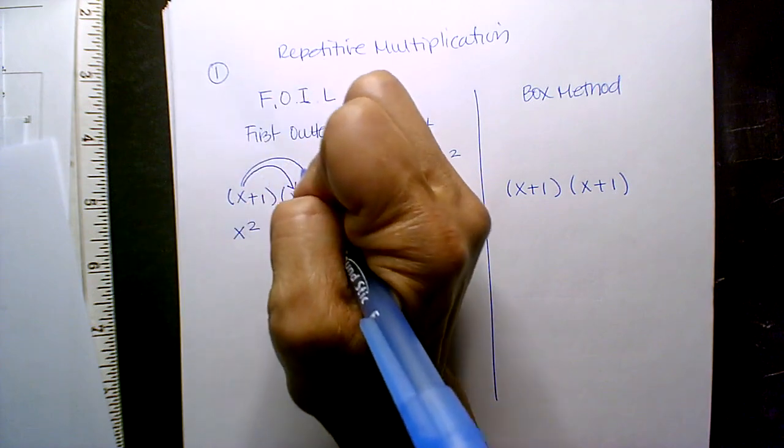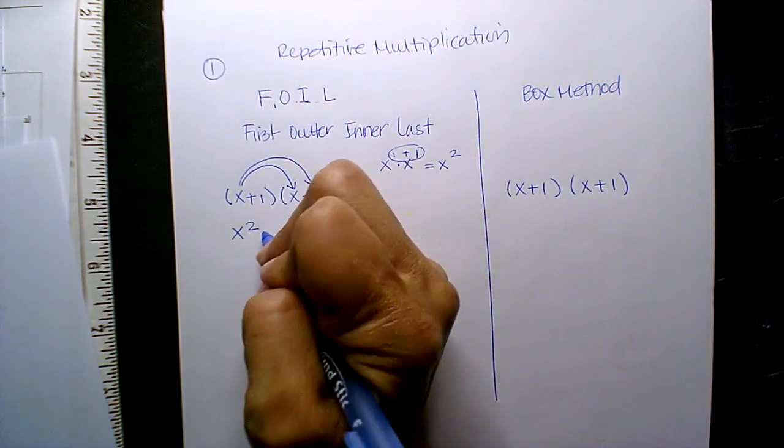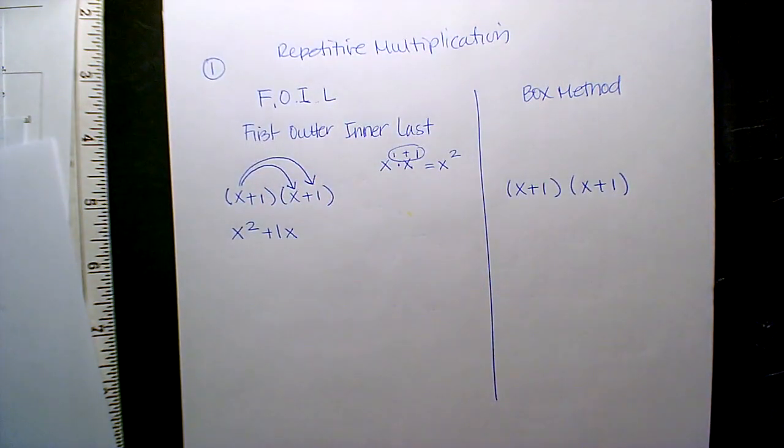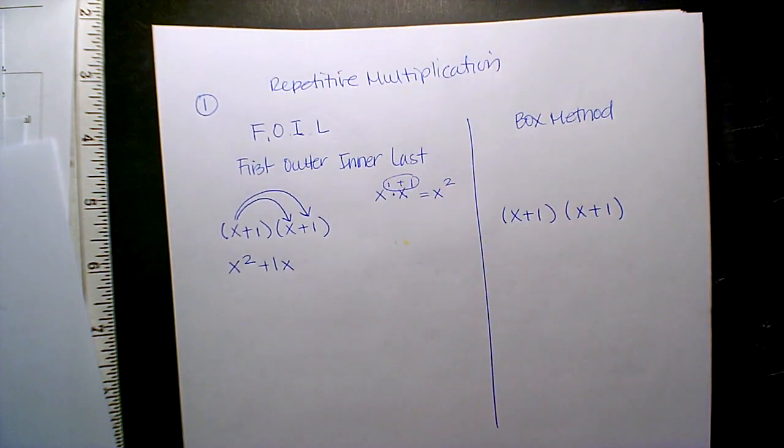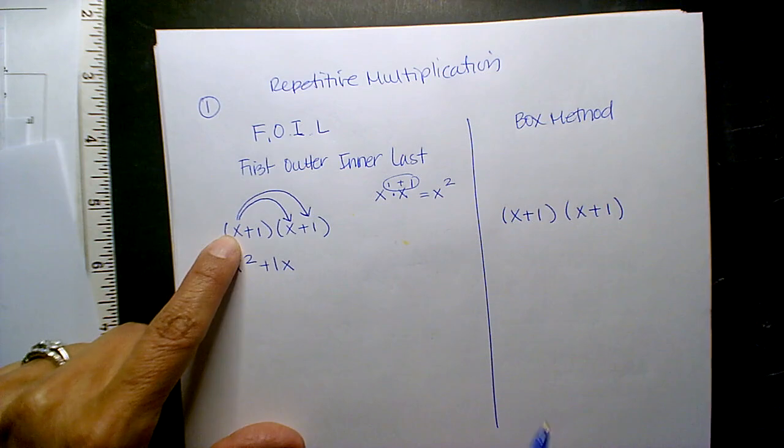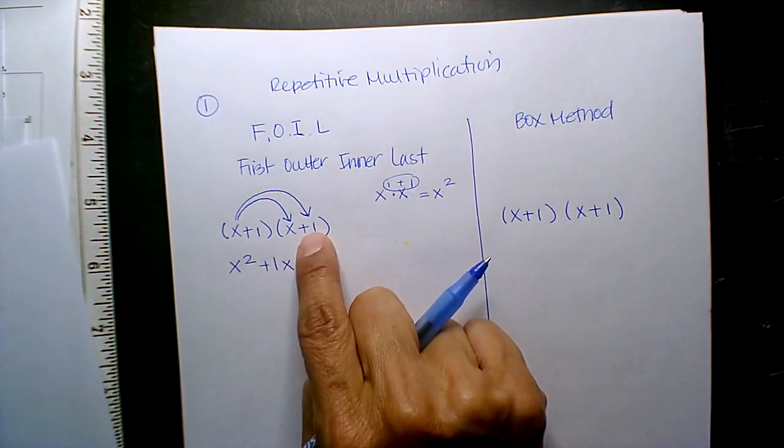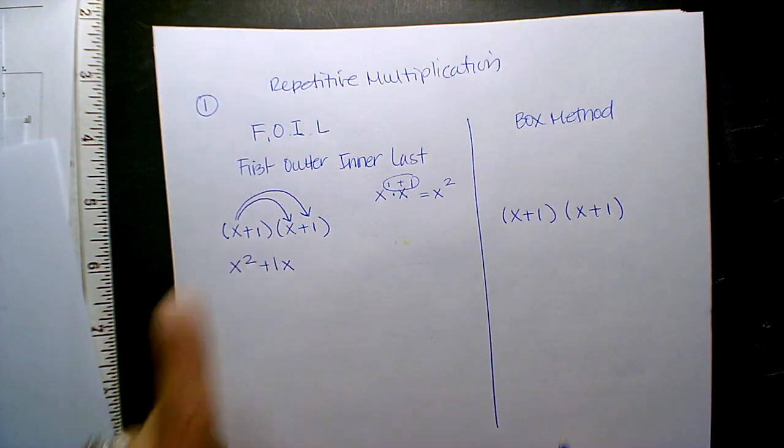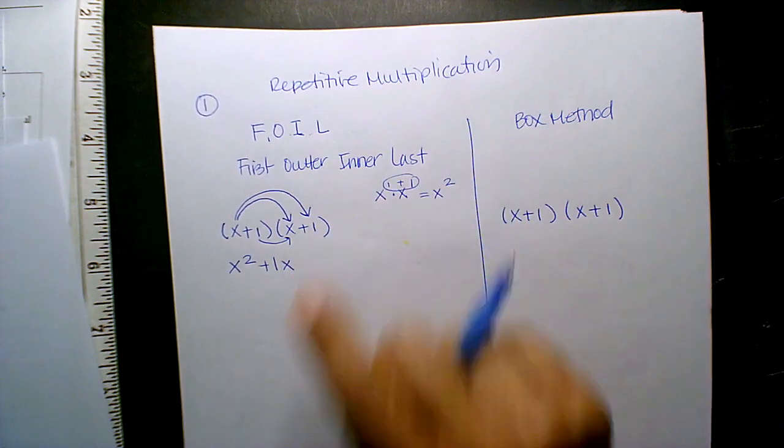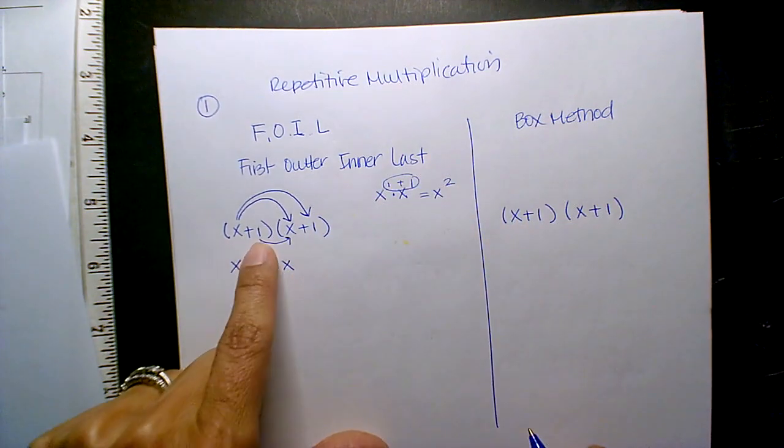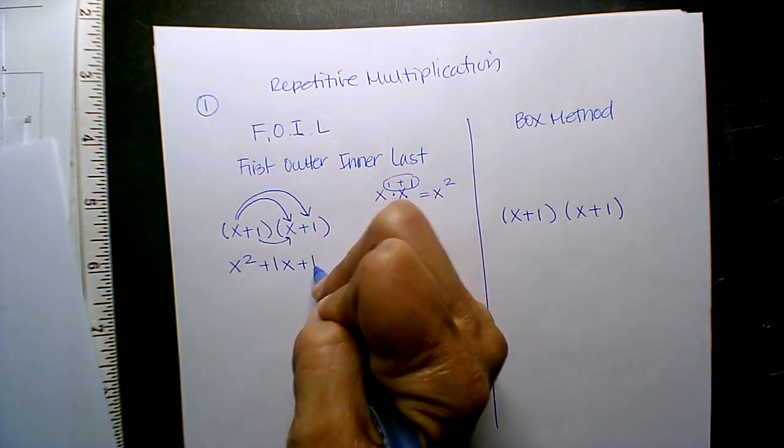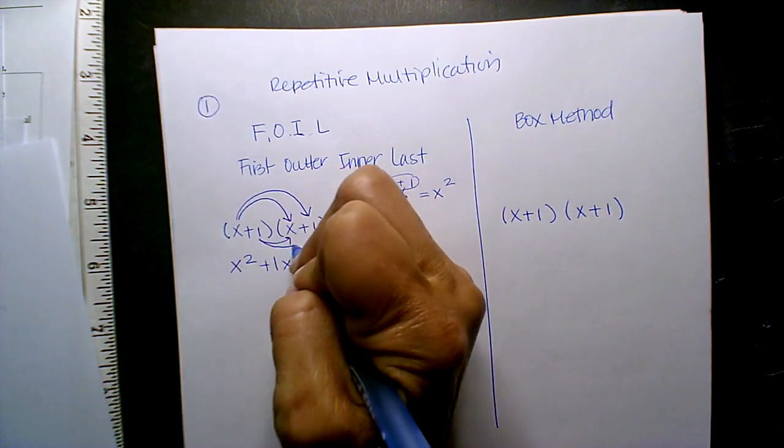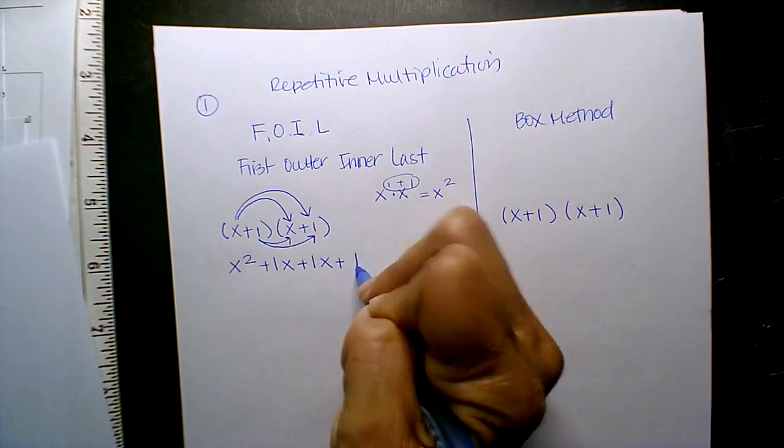So now x times 1 is 1x. Remember, it's repetitive multiplication. I'm done with that term because it already multiplied to every term in the second binomial. So now I'm going to take the second term and multiply it to each term. So what's 1 times x? 1x. And now what is 1 times 1? 1.